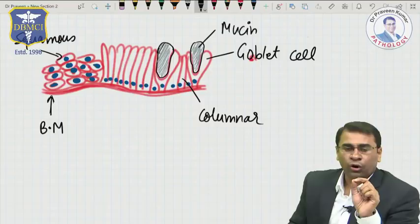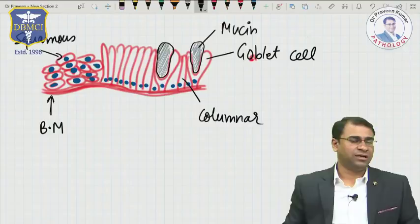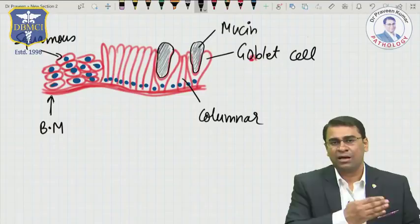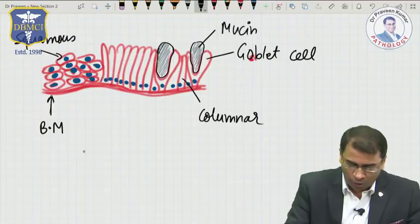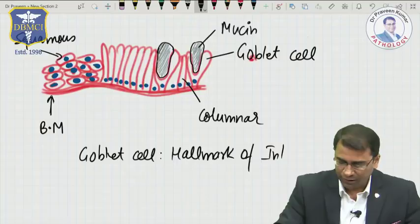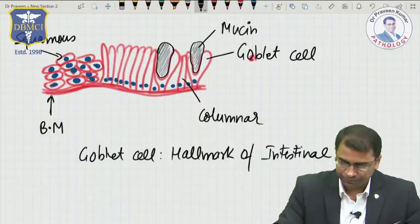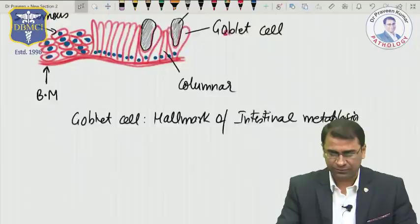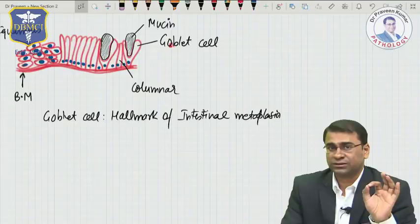Where is the goblet cell normally present? Normally, a goblet cell is present in the intestine. So whenever you find a goblet cell, it shows that the esophagus epithelium has changed to intestinal type of epithelium. For this reason, goblet cell is the hallmark of intestinal metaplasia.